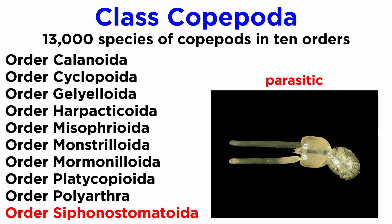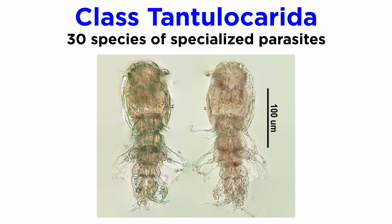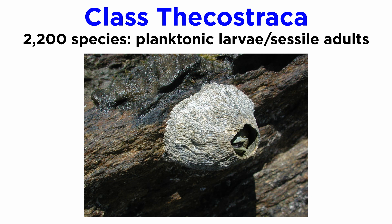Class Tantulocarida includes about 30 species of extremely tiny, highly specialized parasitic crustaceans, most of which are ectoparasites that parasitize the bodies of copepods, isopods, and ostracods. The closely related class Thecostraca includes about 2,200 described species, most of which are planktonic as larvae and sessile or parasitic as adults.